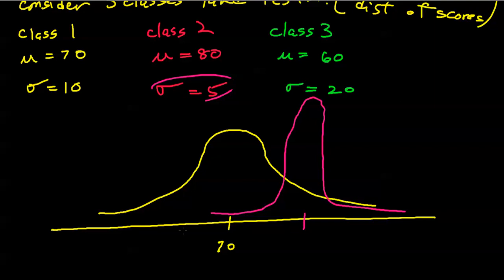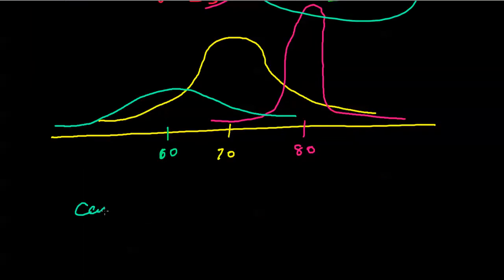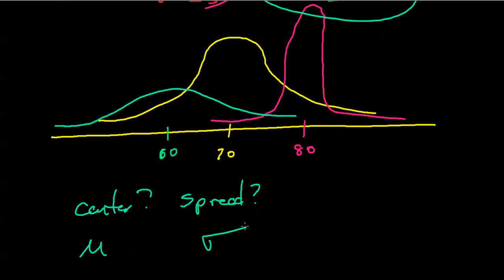Class 3, overall, did a little worse — their mean is worse. Their peak of the bell would be at value 60, but with a higher standard deviation, there's a higher degree of spread of those test scores. So there are all kinds of normal distributions, and normal distributions are characterized by two items: the center and the spread — in other words, by the mean and the standard deviation.